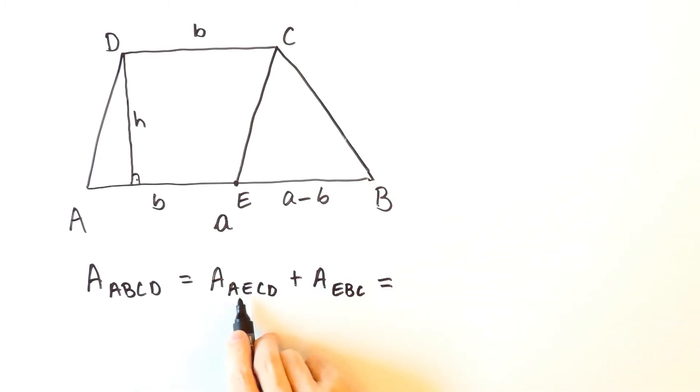And the area of the parallelogram AECD is B times H. The area of the triangle EBC is A minus B times H over 2.